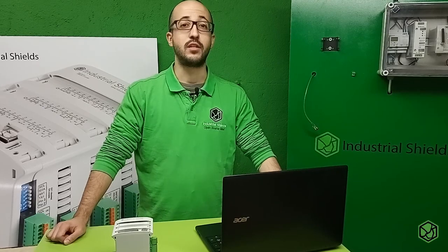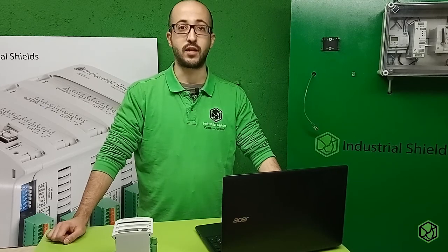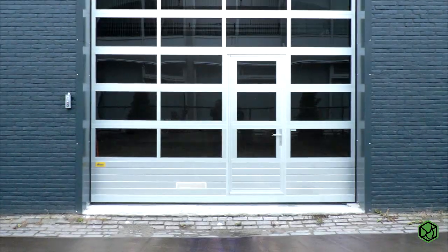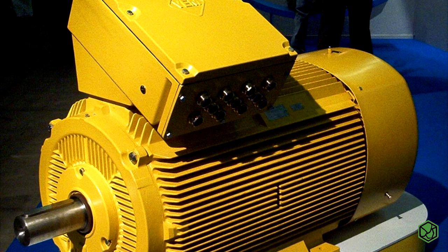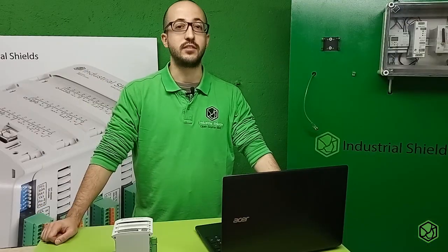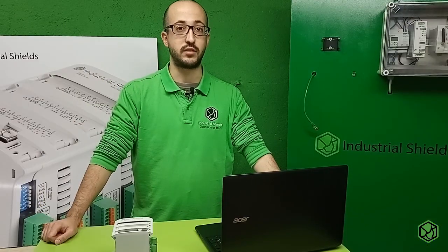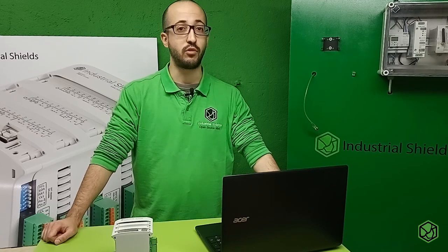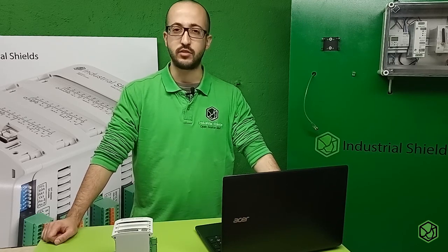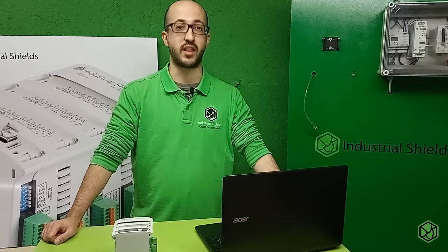Digital outputs are widely used to control actuators that only can work with two values. Thanks to them, for example, we can control lights, a door, or switch on a motor. Industrial Shields PLCs are designed to work with isolated digital outputs from 5V to 24V. It means you can use a lot of actuators without adapting the voltage.